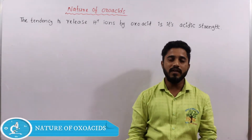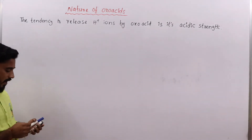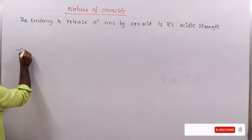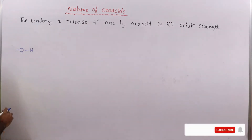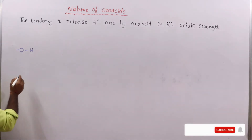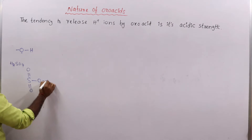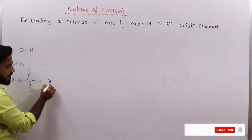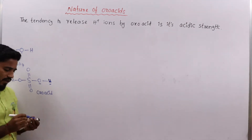Hi everyone, welcome to JSM. In this video I am going to explain the nature of oxo acids. An oxo acid is defined as a molecule where the ionizable hydrogen is bonded to oxygen. For example, in H2SO4, the hydrogen bonded to oxygen is ionizable, which is why H2SO4 is said to be an oxo acid.